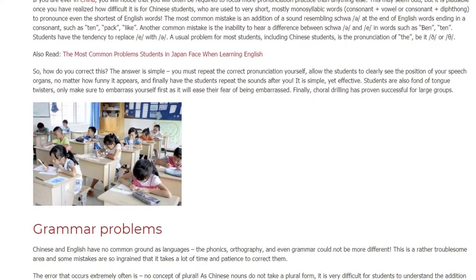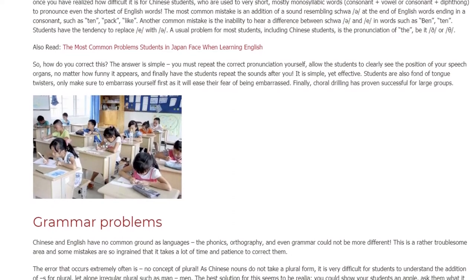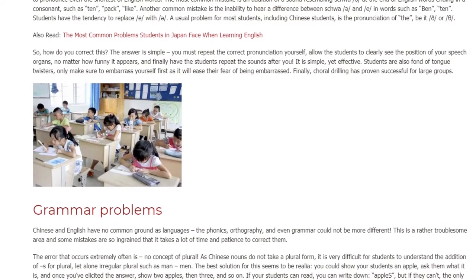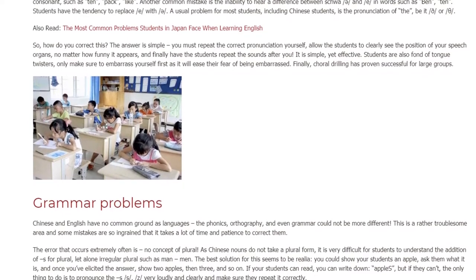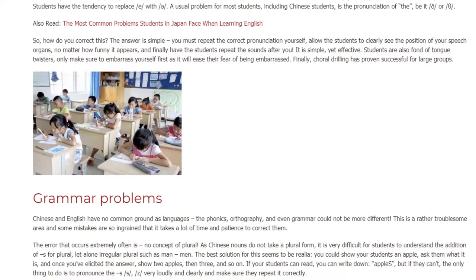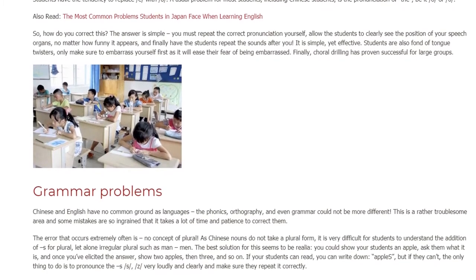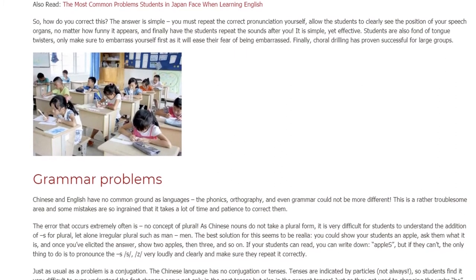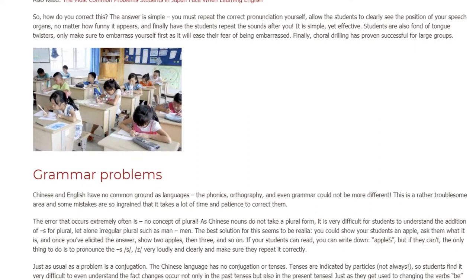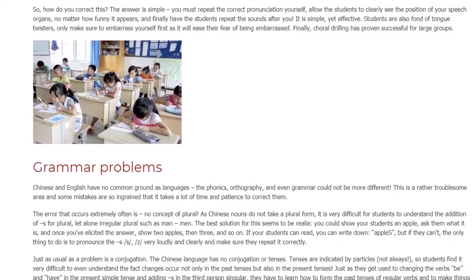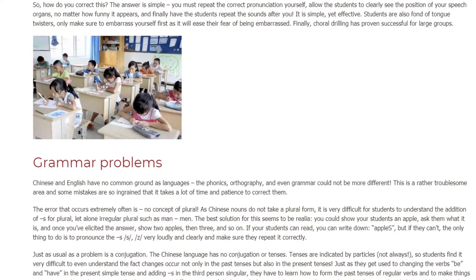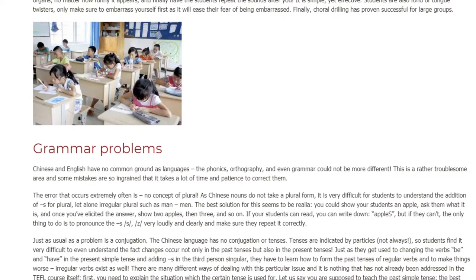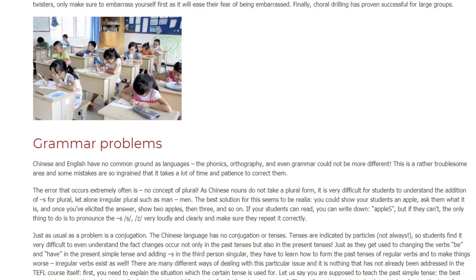Grammar Problems. Chinese and English have no common ground as languages — the phonics, orthography, and even grammar could not be more different. This is a rather troublesome area and some mistakes are so ingrained that it takes a lot of time and patience to correct them. The error that occurs extremely often is no concept of plural. As Chinese nouns do not take a plural form, it is very difficult for students to understand the addition of 's' for plural, let alone irregular plurals such as 'men.'